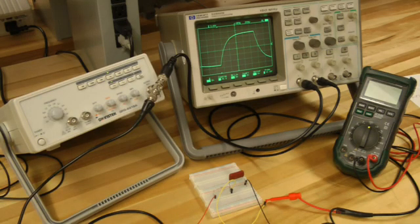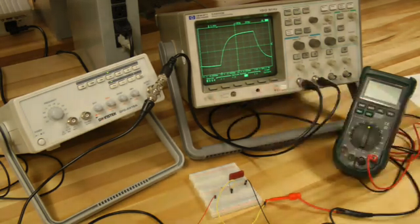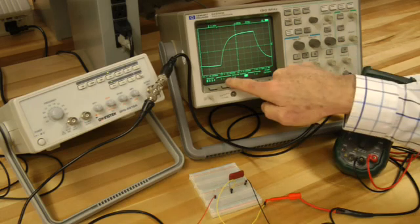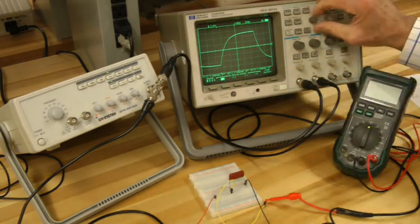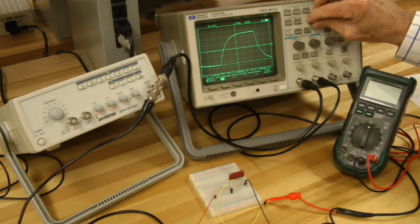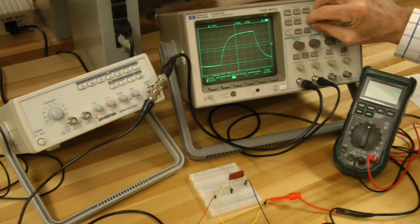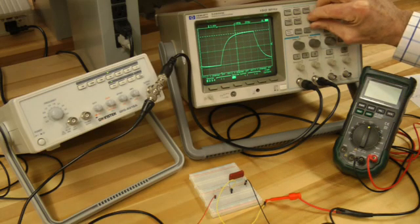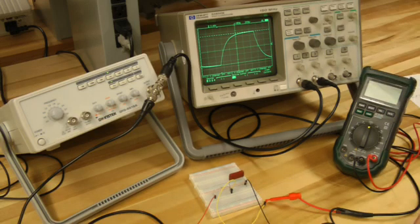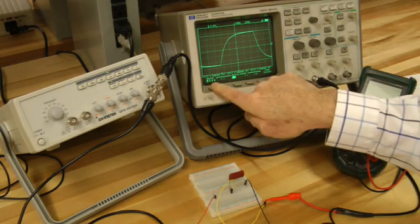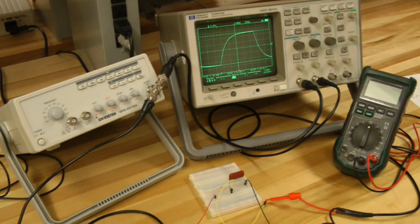Now to measure the time constant for my RC circuit, I'm going to use my cursors. I'll turn cursors on and make sure the source is channel one. I'll turn voltage one on and I'll move it down so it's at the starting point for my step response. I'll turn voltage two on and I'll bring it all the way to the top at steady state. And I need to have my source set at source two so that I'm reading these voltages on my measured signal.